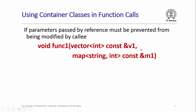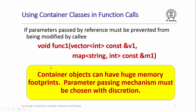If you pass parameters by reference, there is a certain risk that the callee function might end up modifying the parameters you passed, even though you did not intend them to be modified. If you really want to prevent the callee function from modifying the parameters, you can use the const keyword in the declarations of the parameters. If the body of func1 tries to modify either parameter v1 or m1, the compiler will complain and report an error. The bottom line is that container objects can have huge memory footprints, so you need to choose the parameter passing mechanism with discretion.